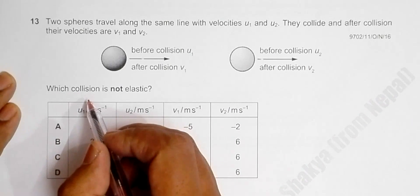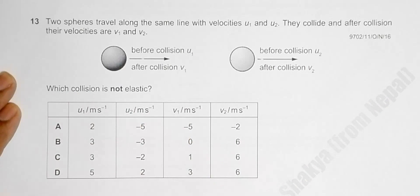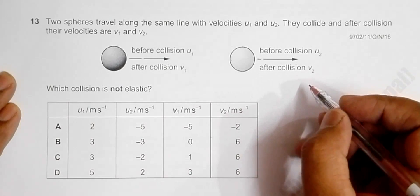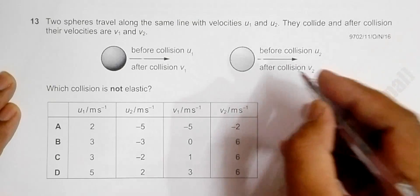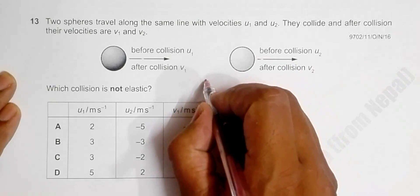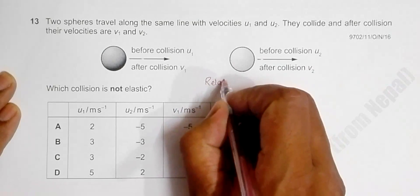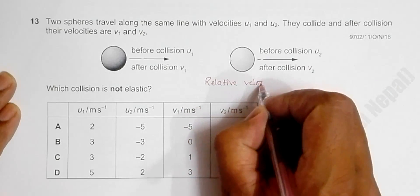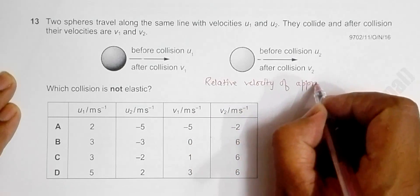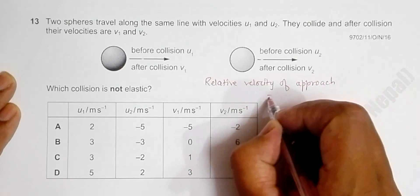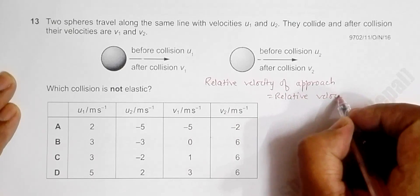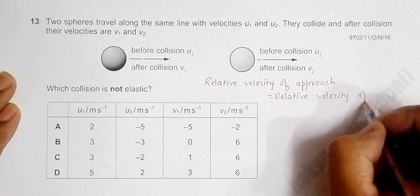Now with this table, we have to identify which collision is not elastic. The criteria for being elastic or not elastic is we have a very simple equation: relative velocity of approach should be equal to relative velocity of separation.